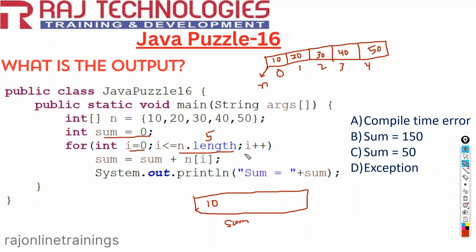The control goes to i plus plus, i will become 1. The value of i is now 1. 1 less than or equal to 5, condition is true. Sum equal to sum plus n of i, so 20 will be added to the previous sum of 10. The value of sum will become 30. Then again i plus plus, i will become 2.